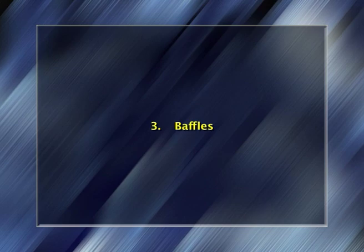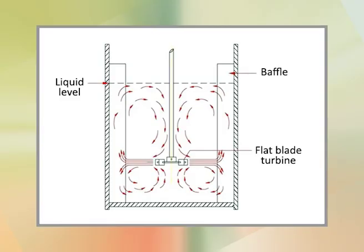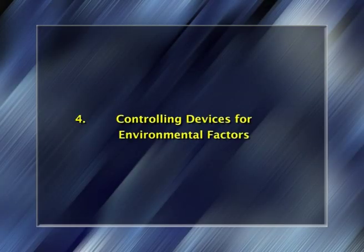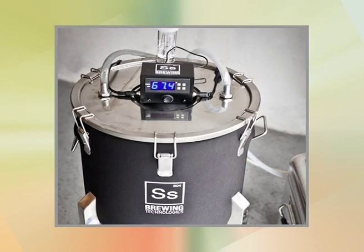Baffles are normally incorporated into the fermenter of all sizes to prevent a vortex and to improve aeration efficiency. They are metal strips roughly one-tenth of the fermenter's diameter and attached radially to the walls. Controlling devices for environmental factors: in any microbial fermentation, it is necessary not only to measure growth and product formation but also to control the process by altering environmental parameters as the process proceeds. Environmental factors that are frequently controlled include temperature, oxygen concentration, pH, cell mass, level of key nutrients, and product concentration.